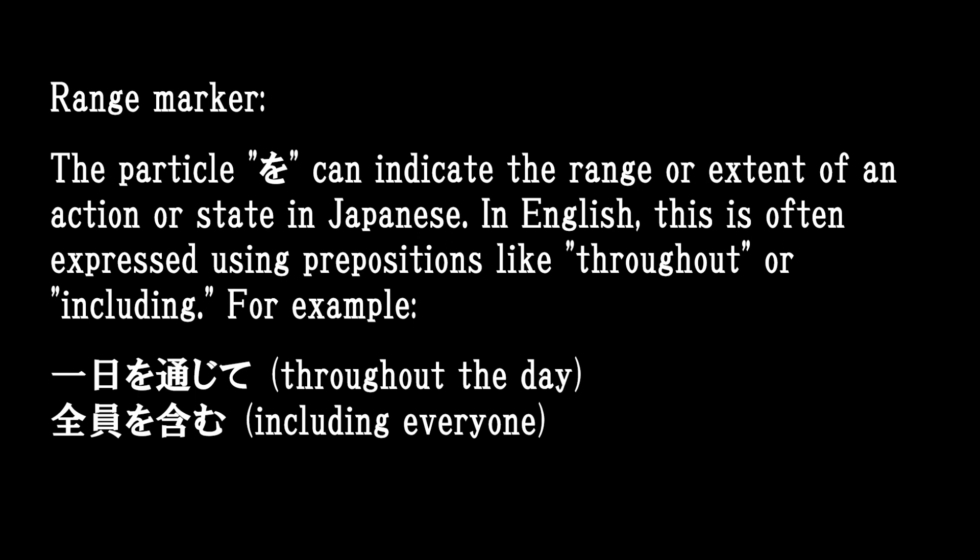Range Marker: The particle O can indicate the range or extent of an action or state in Japanese. In English, this is often expressed using prepositions like 'throughout' or 'including.' For example: Throughout the day; Including everyone. In Japanese: 全員を含む.